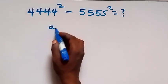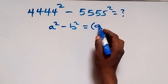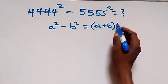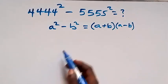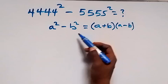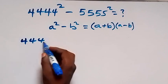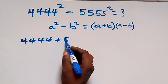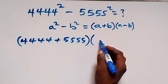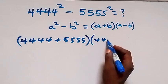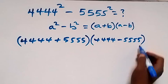From here, applying the difference of squares property: a squared minus b squared can be written as (a + b) times (a - b). So here, 4,444 serves as a and 5,555 serves as b. Then we can write it as (4,444 + 5,555) times (4,444 - 5,555).